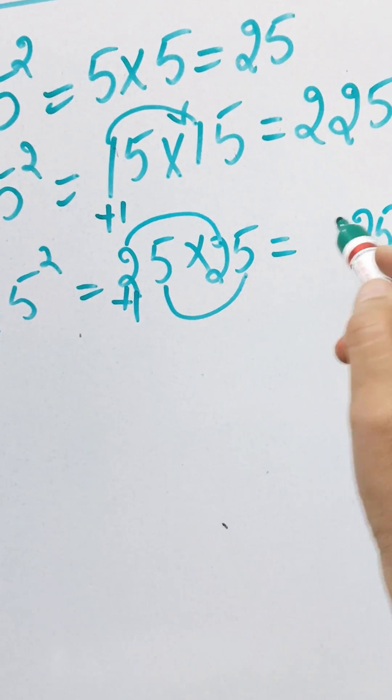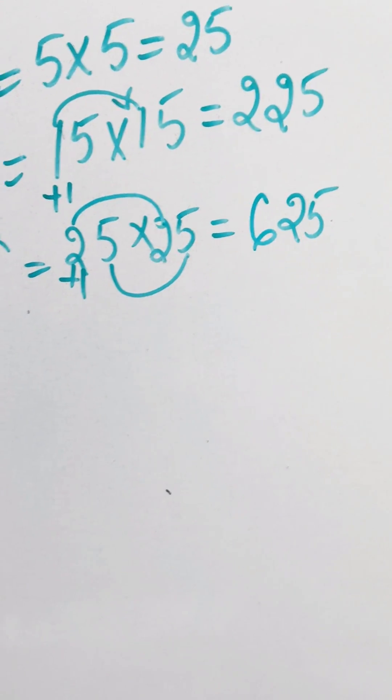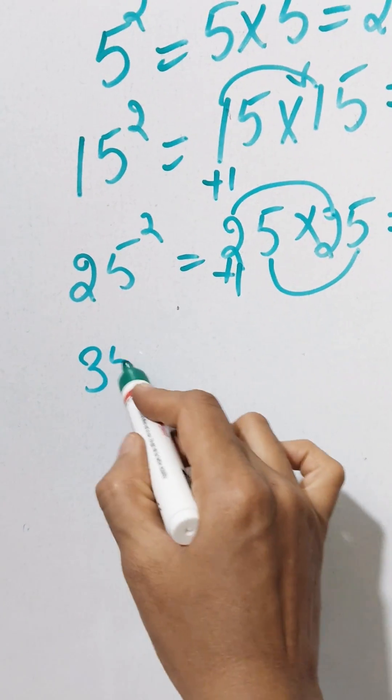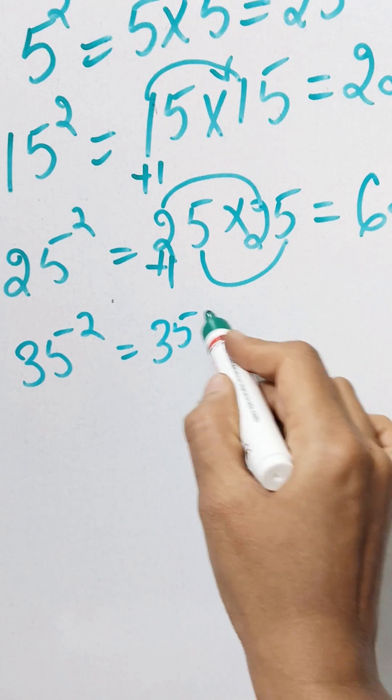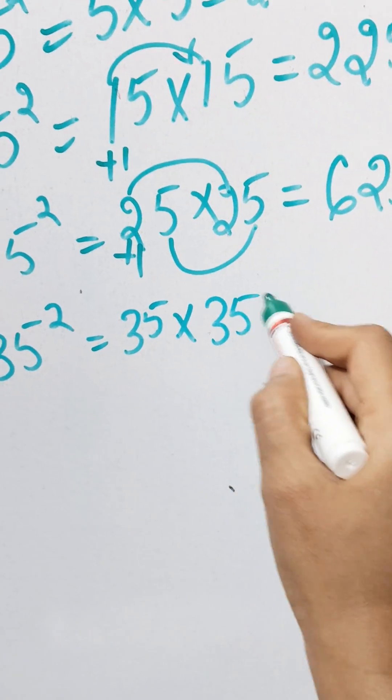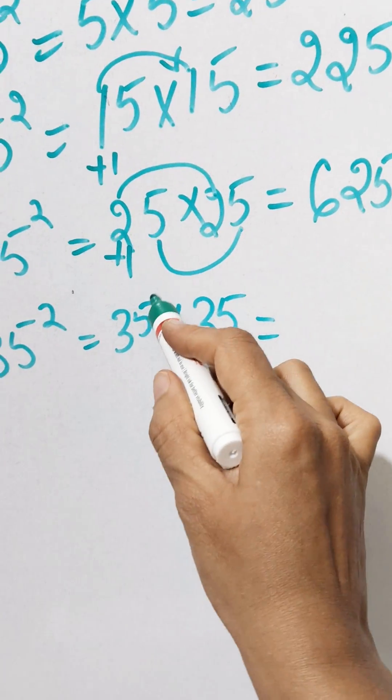35 square, 35 into 35. First multiply 5 and 5, which is 25. Then add 1 to 3, which is 4. Multiply 4 into 3, which is 12. So the answer is 1225.